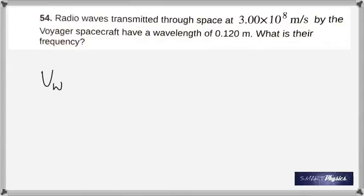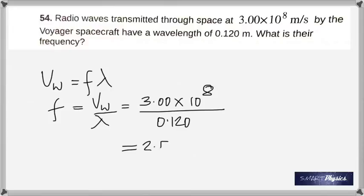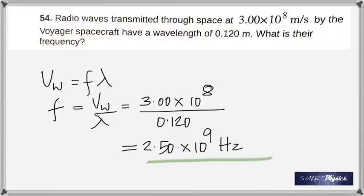This question: radio waves are transmitted through space at 3 times 10 to the 8 meters per second by the Voyager spacecraft, having a wavelength of 0.120 meters. What is their frequency? Velocity equals frequency times wavelength, so frequency is velocity divided by wavelength. Both are in proper units, so just divide and you get 2.50 times 10 to the 9 Hertz.